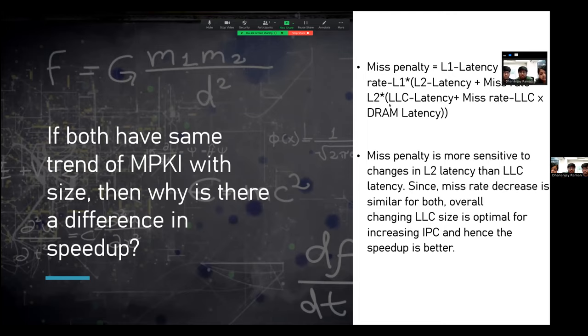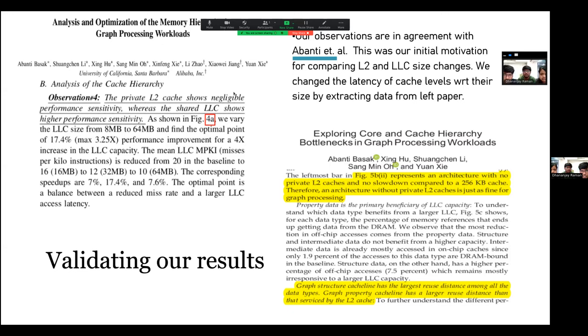Here we validate our results with what we saw in various research papers. The basic outcome was that private L2 cache shows negligible performance sensitivity, while the shared LLC shows high performance sensitivity. Major reason being the large reuse distance among all the workloads. Another observation was that an architecture without private L2 cache is best suited for graph processing.